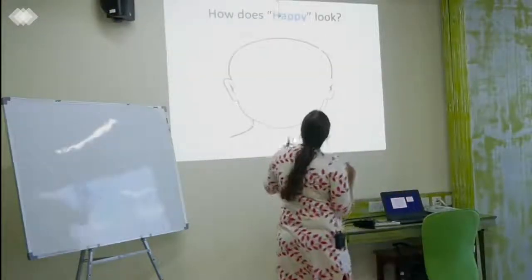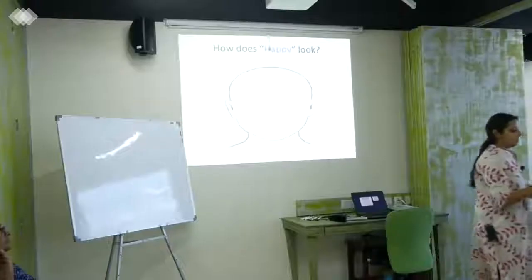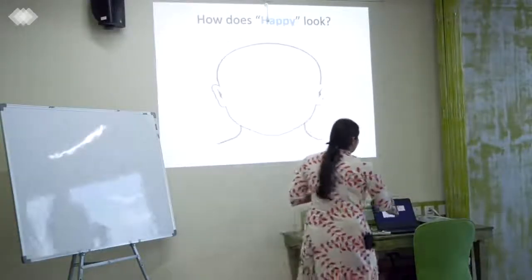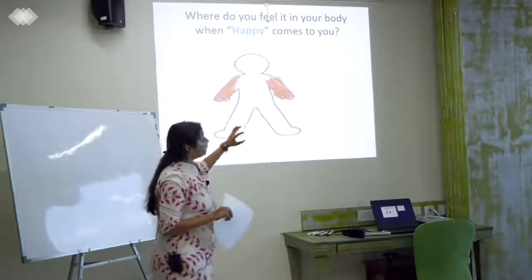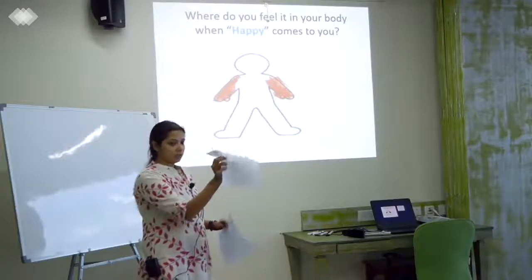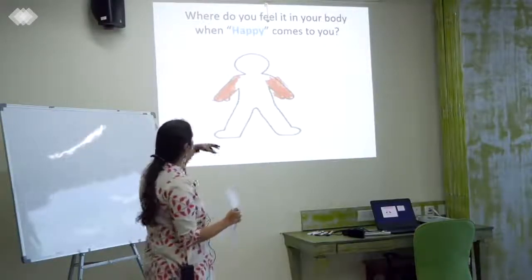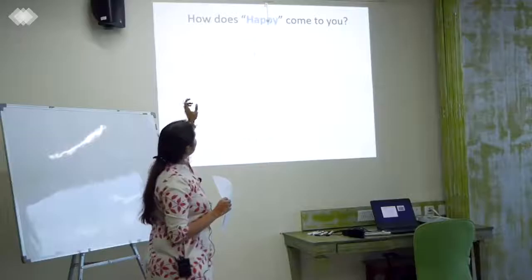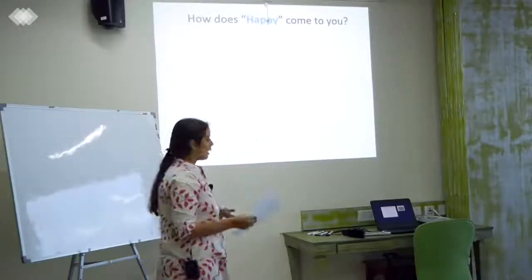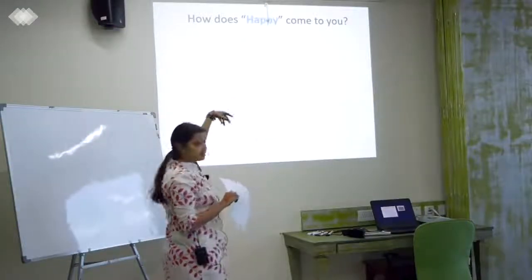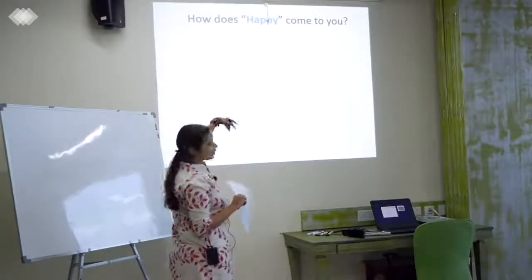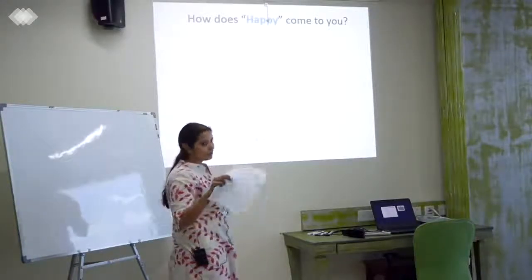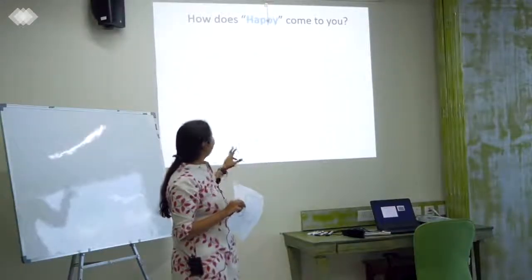We started with a blank sheet asking 'how does happy look to you?' and one of the kids drew it like this. Then we asked where do you feel it in your body when happy comes to you, and they had to color or point to where they feel it. When asked how happy comes to him, the kid said: when he gets a surprise, when he makes chocolate, when there are guests over, when he goes out, when he watches Taarak Mehta, when he gets food, and when he gets to go to his hometown.